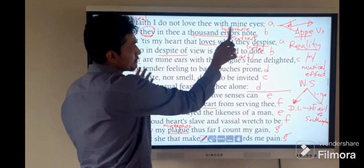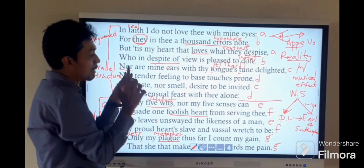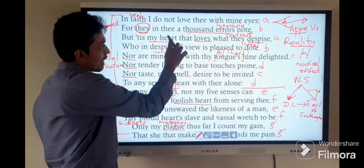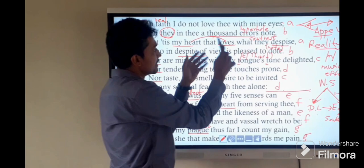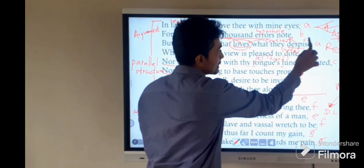But it is my heart that loves what they despise. The contrasting situation is my heart that loves. Although the speaker notes the errors, he cannot get rid of this love. The heart loves what they despise. So you can see a contrast. The heart loves, but despise comes from the senses.